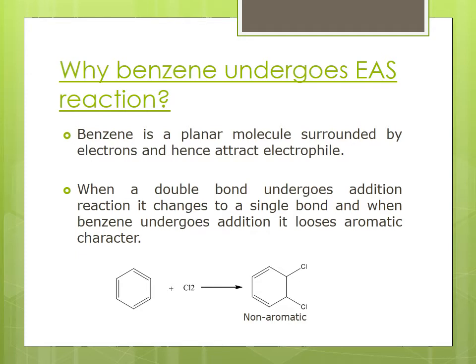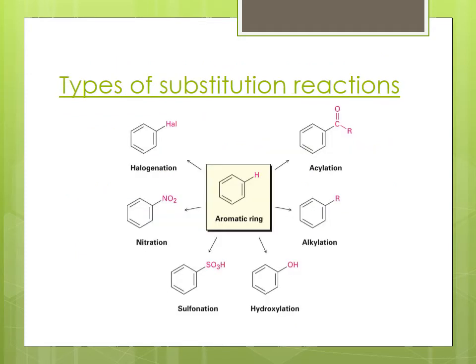These are the various types of electrophilic aromatic substitution reactions: halogenation, nitration, sulfonation, hydroxylation, alkylation, and acylation. We will discuss all of them one by one in detail.